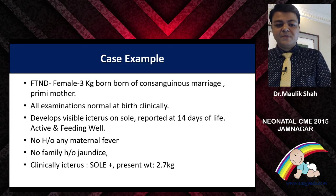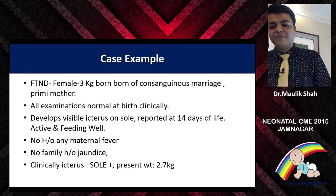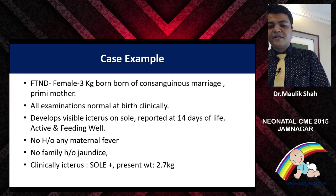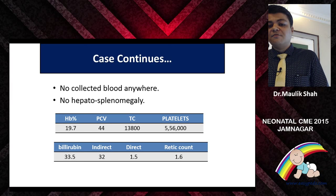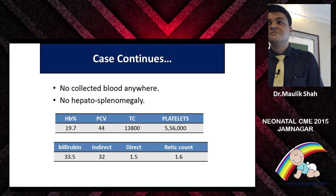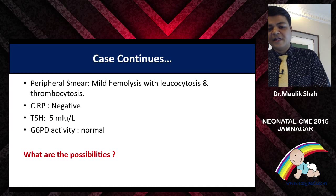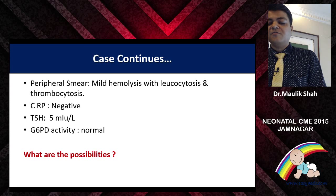A case example: a full-term female baby of 3 kg with all normal examinations, persistent icterus on sole at 14 days of life, active feeding, no history of maternal fever, icterus soles positive, present weight 2.7 kg, no cephalohematoma, no hepatosplenomegaly. Investigations were done. A peripheral smear would be done for hemolysis, leukocytosis, thrombocytosis; CRP is negative; TSH done; G6PD activity is normal. The three possibilities remaining are Crigler-Najjar syndrome, breast milk jaundice, and idiopathic.